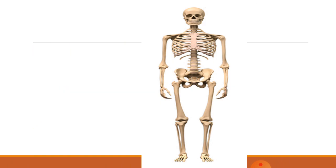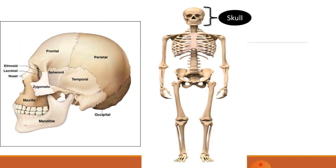First, we will see the skull in detail. It is a very important part because it protects our brain — so in case of a heavy jerk or any injury, it keeps the brain safe and secure. The skull is made up of a variety of bones. The front part is known as the frontal bone, the backward portion is the parietal, both sides are the temporal bones, there is a smaller bone known as the sphenoid, and the upper facial area has the zygomatic bone. The upper jaw is the maxilla, the lower jaw is the mandible, and the downward back portion is the occipital.